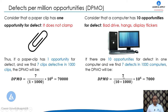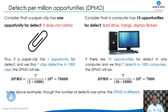The DPMO is calculated as 7 (the number of defectives observed) divided by 10 (the opportunities per computer) multiplied by 1,000 (computers inspected), then multiplied by 10 raised to 6. This gives a result of 7,000. Though the number of defects was the same in both examples, the DPMO is different.